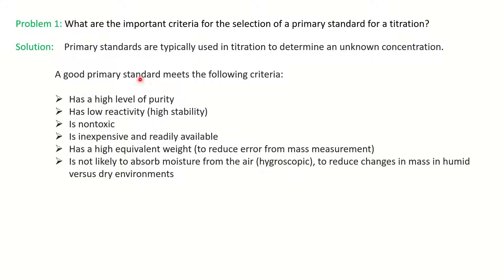The criteria for selecting a primary standard: first, it should have a high level of purity. It should be low in reactivity so that it will not react with your analyte itself, meaning it should have high stability. Obviously it should be non-toxic, inexpensive, and readily available. It should have a high equivalent weight to reduce the error of mass measurement. It should not absorb moisture from the air — that means it should not be hygroscopic — as absorbing moisture would change the total mass and thus the unknown concentration.